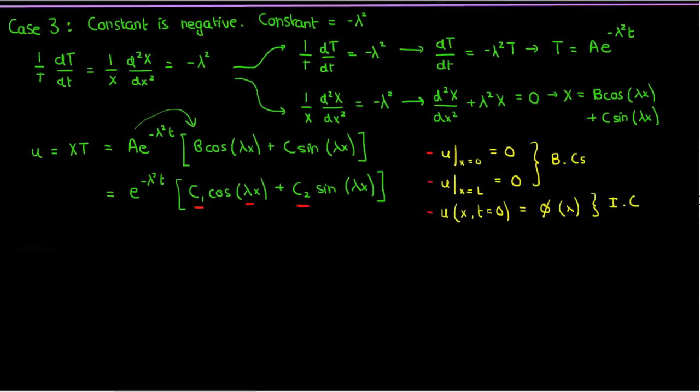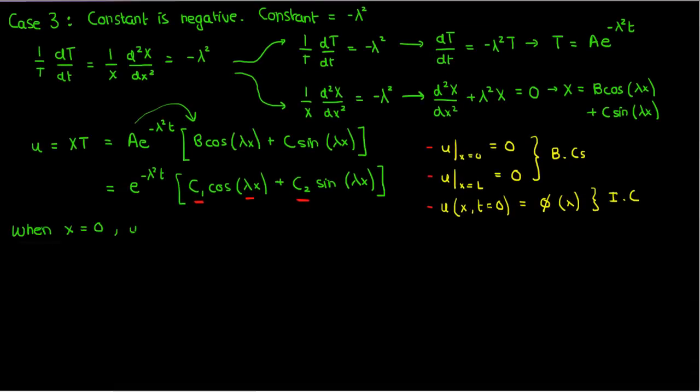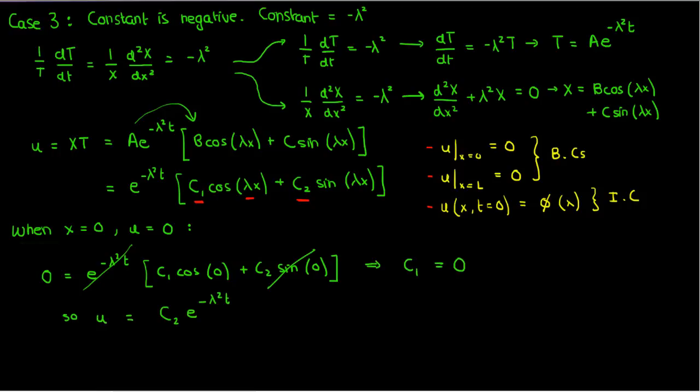Let's apply the simplest boundary condition first, so when x is zero, u is also zero. If we do that, we can see that the exponential in time cancels out since the exponentials are never zero. We can also see that the sine term goes away because the sine of zero is also zero. And since cosine of zero is one, what we're left with is that c1 equals zero. So our solution u now is just c2 times the exponential of negative lambda squared t times sine of lambda x.